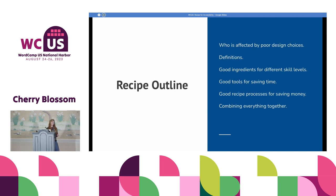The outline for the talk today: who is affected by poor design choices, some definitions to keep us going throughout the talk, some good ingredients for different skill levels, tools to help us save time, putting it together in an actual process, and a little bit of a wrap-up to help you get going with it in your processes.